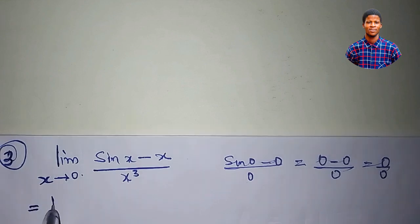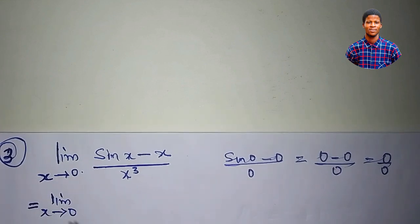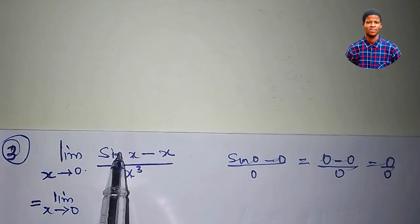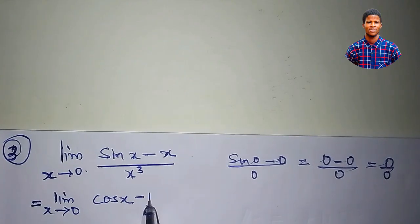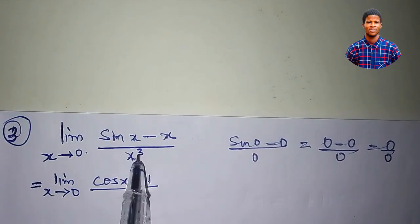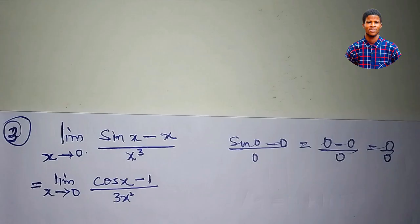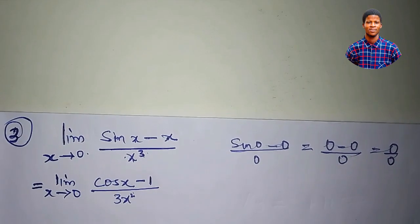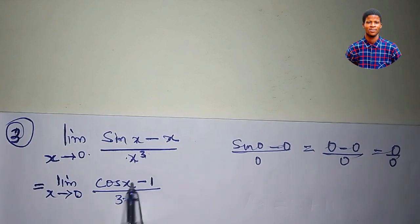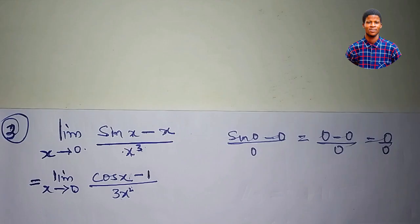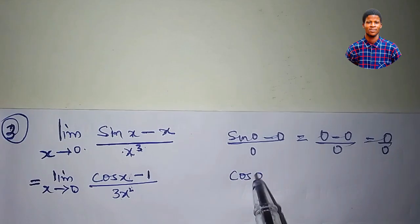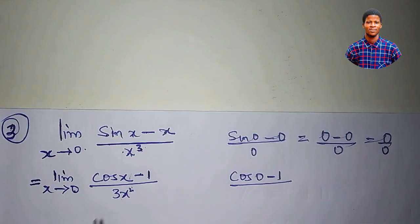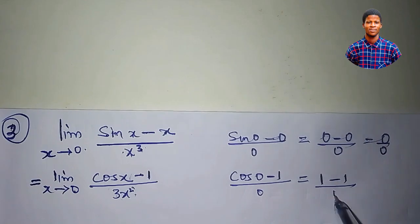The limit as x approaches 0 — differentiate sine x to get cos x, differentiate x to get 1, giving cos x minus 1 in the numerator. Differentiate x cubed to get 3x squared. If we plug in 0: cos 0 minus 1 is 1 minus 1, which is 0, and 3 times 0 squared is 0. We can see this is still 0 over 0.